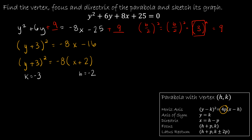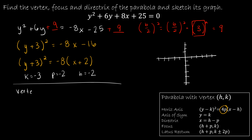From here, I'm going to graph this. Starting with the vertex, which is (h, k) = (−2, −3). Then the axis of symmetry for a horizontal parabola is y = k, so y = −3. That's the dotted line through the vertex that you could fold the parabola in half across. Then let's find the directrix.